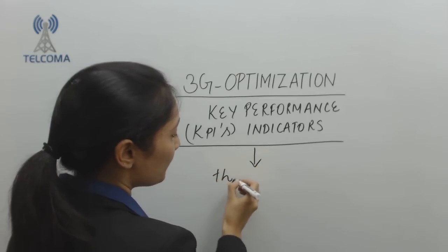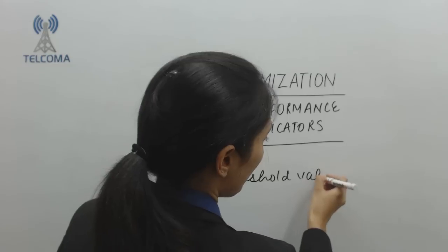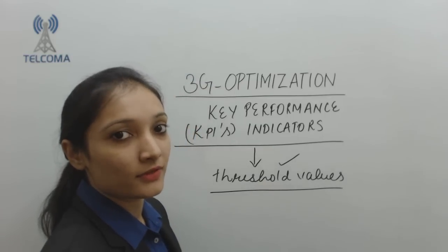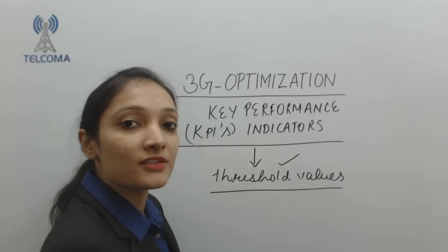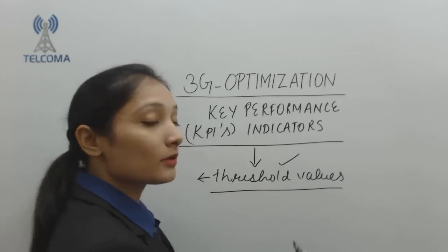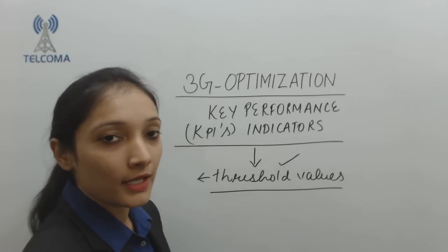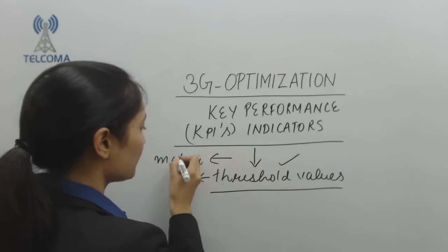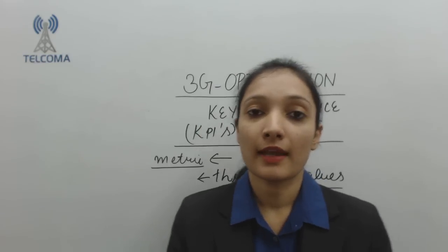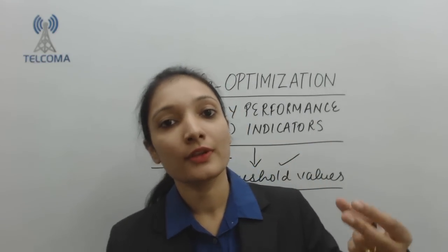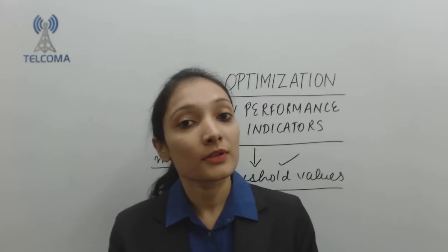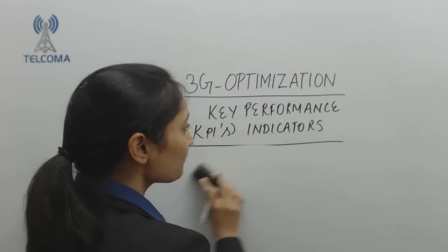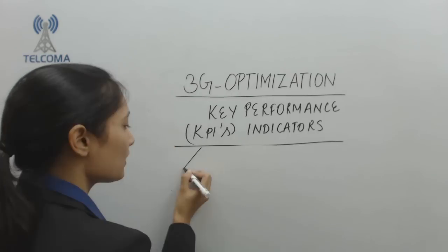KPIs have particular threshold values. If a KPI degrades below its threshold value, it clearly indicates the network is suffering from some issues — coverage-related or otherwise. KPIs act like a performance metric: just as students have marks with a threshold, scoring below it means there is a problem. Similarly, KPIs evaluate network performance. There are a number of KPIs for 3G network optimization.